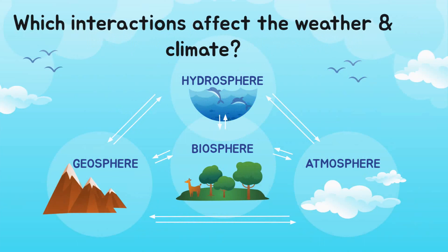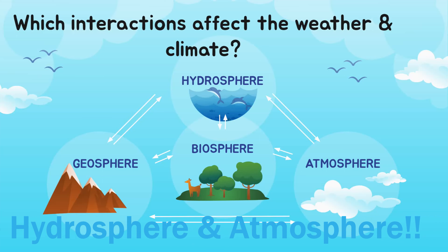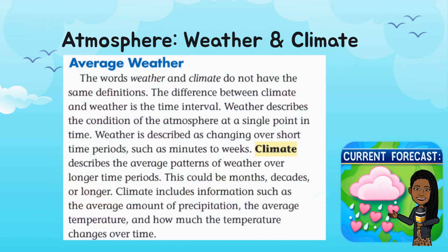Which interactions affect the weather and climate? The hydrosphere and the atmosphere. The words weather and climate do not have the same definitions. The difference between climate and weather is the time interval. Weather describes the condition of the atmosphere at a single point in time and changes over short periods — minutes to weeks. Climate describes the average patterns of weather over longer time periods, such as months, decades, or longer. Climate includes average precipitation, average temperature, and how much the temperature changes over time.